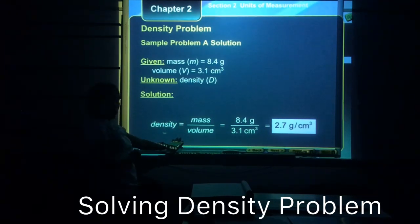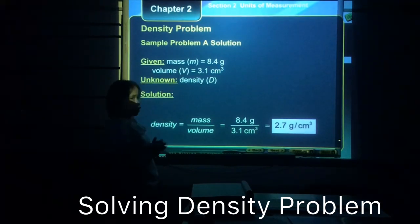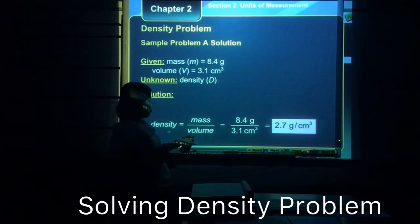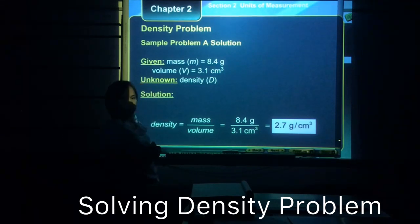And checking on the units of mass and volume, they're compatible with each other. We got the correct unit. So all we need to do right away is to substitute the values of mass and volume. So mass is 8.4 grams, the volume is 3.1 cubic centimeter. And so we can just divide them in the calculator, and then we will get the answer 2.7 grams per cubic centimeter.